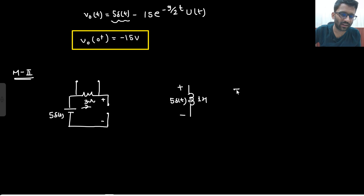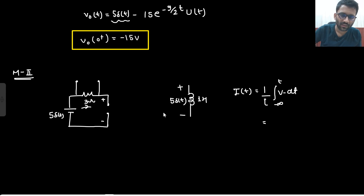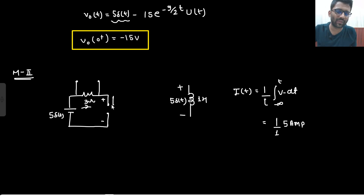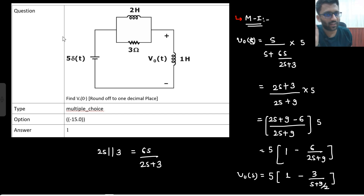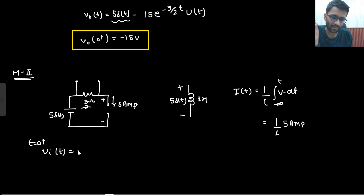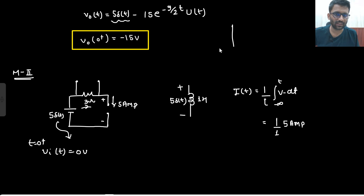So what will be the current? The current expression for an inductor is (1/L) times the integral of V dt. So with L = 1 and V = 5δ(t), integrating gives you 5 ampere current. Suddenly you have developed 5 ampere current in this inductor. At t equals 0 plus, this is gone — the voltage source is gone. V_in(t) is 0 volt at t equals 0 plus, because the impulse exists only at t equals 0, not at 0 plus.